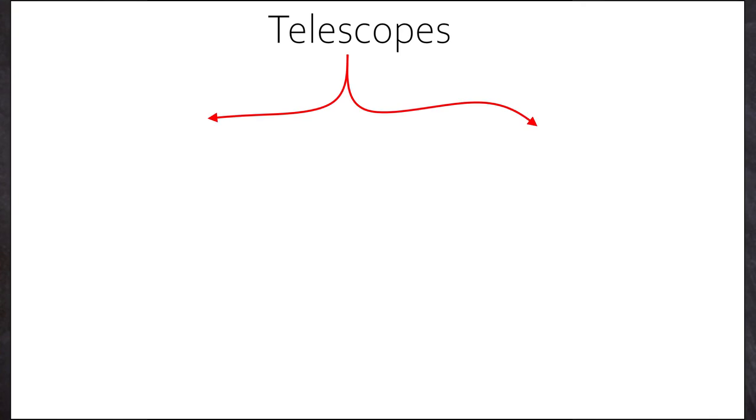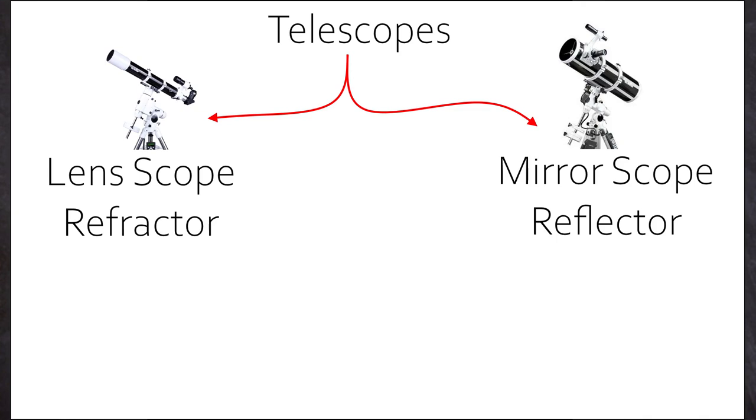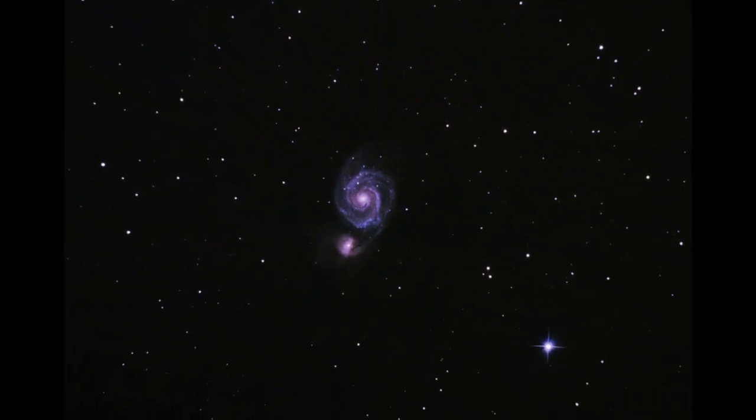We have two categories of scopes. Lens scopes called refractors and mirror scopes called reflectors. Both aim to collect lots of light from a given source so that you can see faint and distant objects.